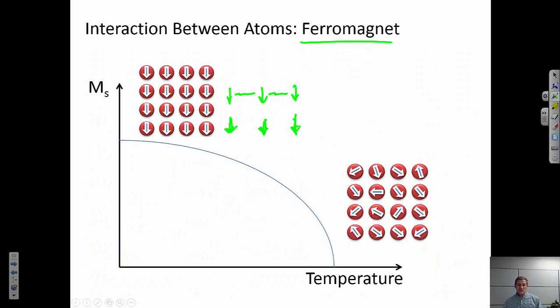Now, if I take any ferromagnet and I start heating it up, at some point I'm going to put enough thermal energy in there that that thermal energy will outweigh the benefit I get from the magnetic moments on the atoms lining up. So I would see a curve that looks something like this. The saturation magnetization, the total magnetic moment that I could get in that material, will decrease as I increase the temperature. I'm putting in more thermal energy, the system's becoming more and more disordered. And at some point, I would call this the Curie temperature.